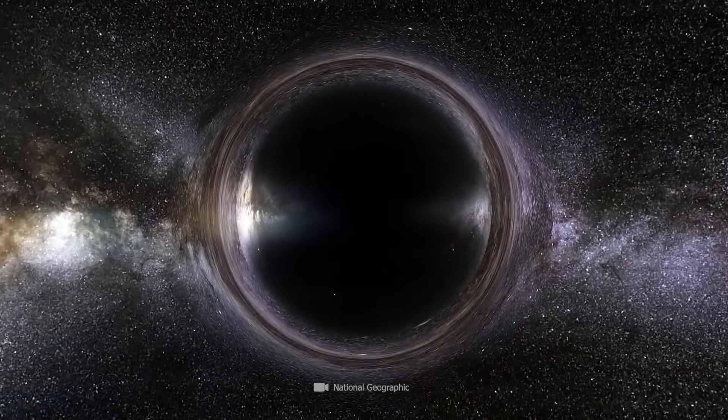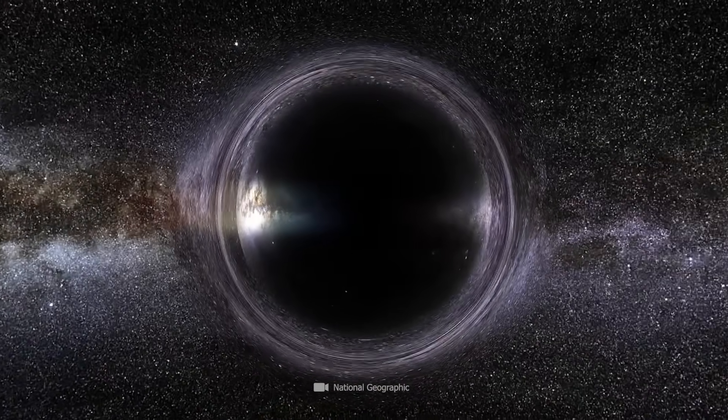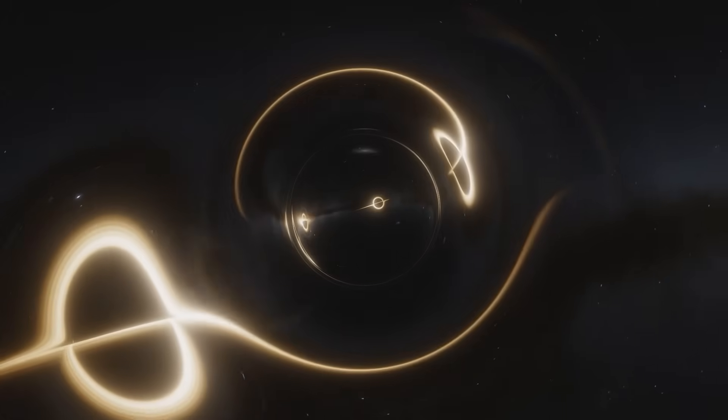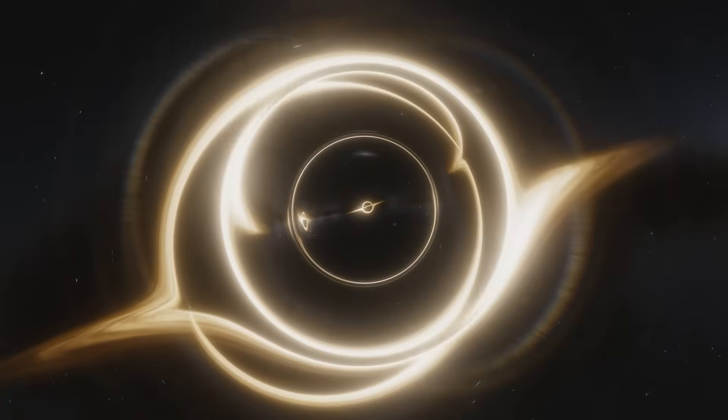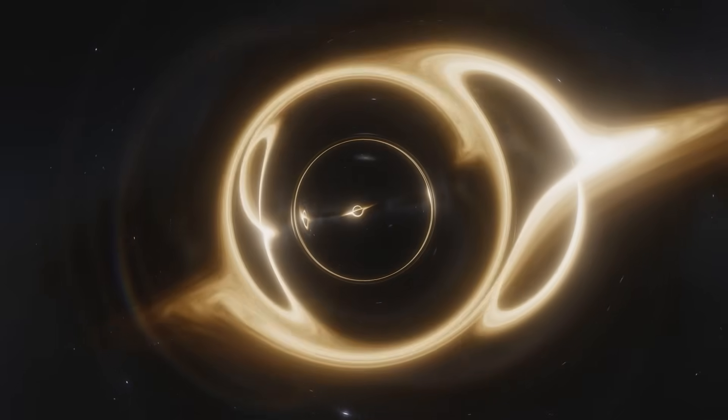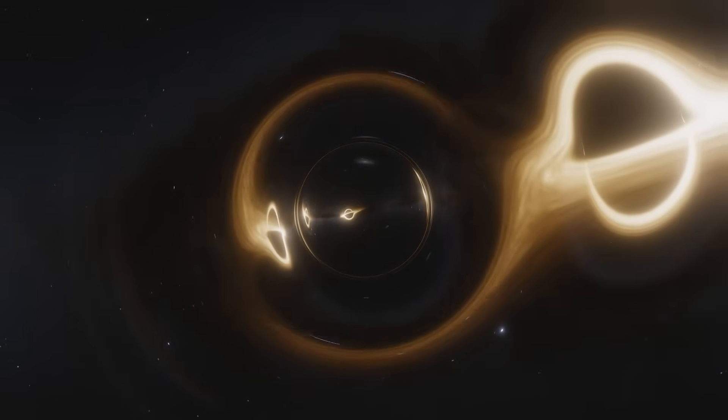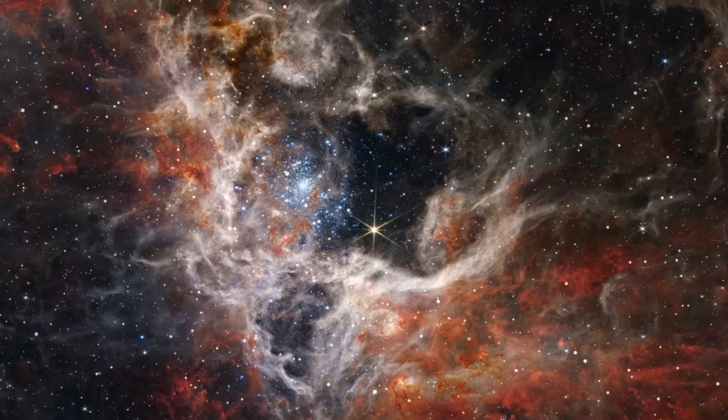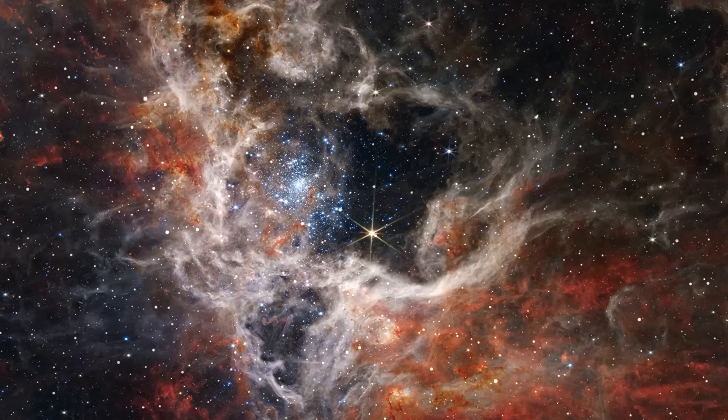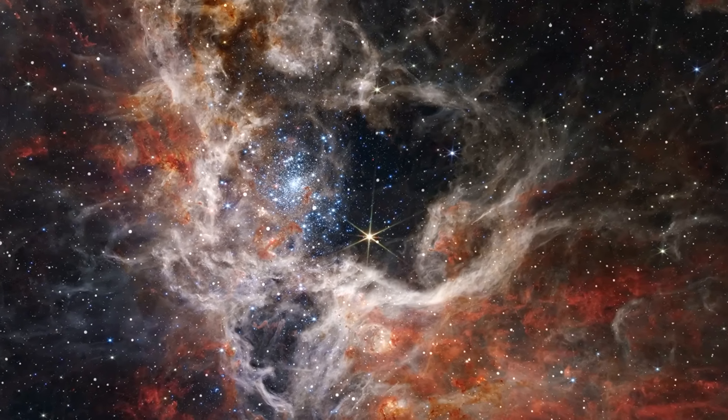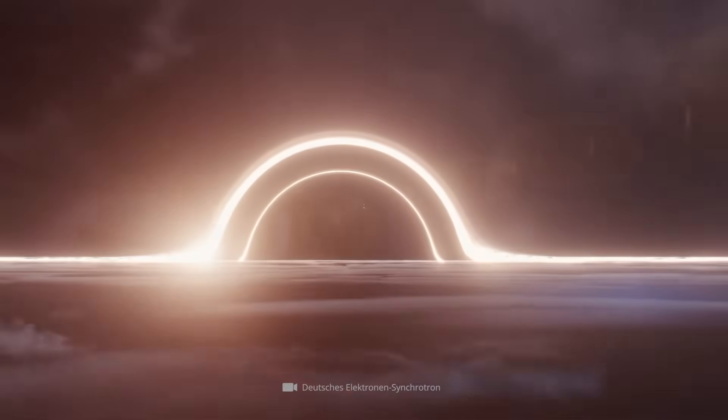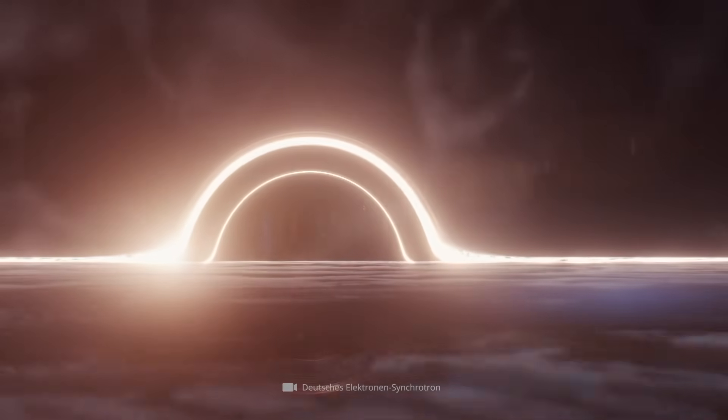Of course, we have to ask ourselves how black holes could grow so quickly and we have to ask ourselves how they are created in the first place. Researchers agree that the medium and small ones are the remains of collapsed stars. However, the very first black holes could also have been created by dust disks that did not form stars but collapsed immediately to form black holes.